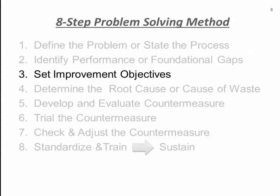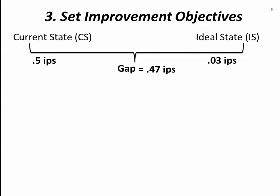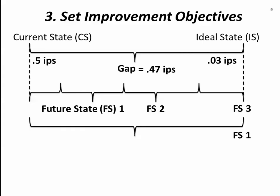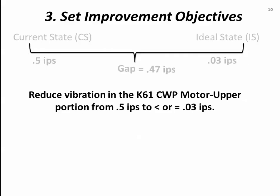The next step is to determine the improvement objectives. Here, we ask ourselves how much of the gap will we fix on the first pass. If this was a type of problem that could handle phases of improvement, we could do this iteratively where each future state improves a portion of the gap until the future state equals the ideal state. However, since this is an equipment issue, we want to fix the equipment on the first pass. Therefore, our improvement objective is to reduce vibration on the upper portion of the CAHE-61 CERC water pump motor from .5 inches per second to less than or equal to .03 inches per second.